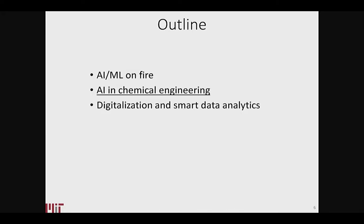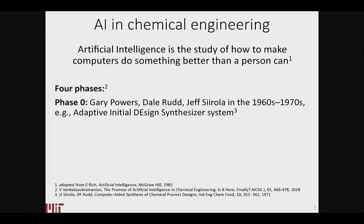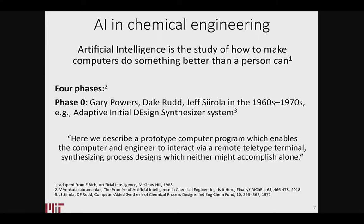So now I want to talk about AI and chemical engineering. The best definition I've seen — I think it was actually a quote in a Venkat paper — is that AI is the study of how to make computers do something better than a human can. There are basically four phases articulated in Venkat's AIChE perspectives.